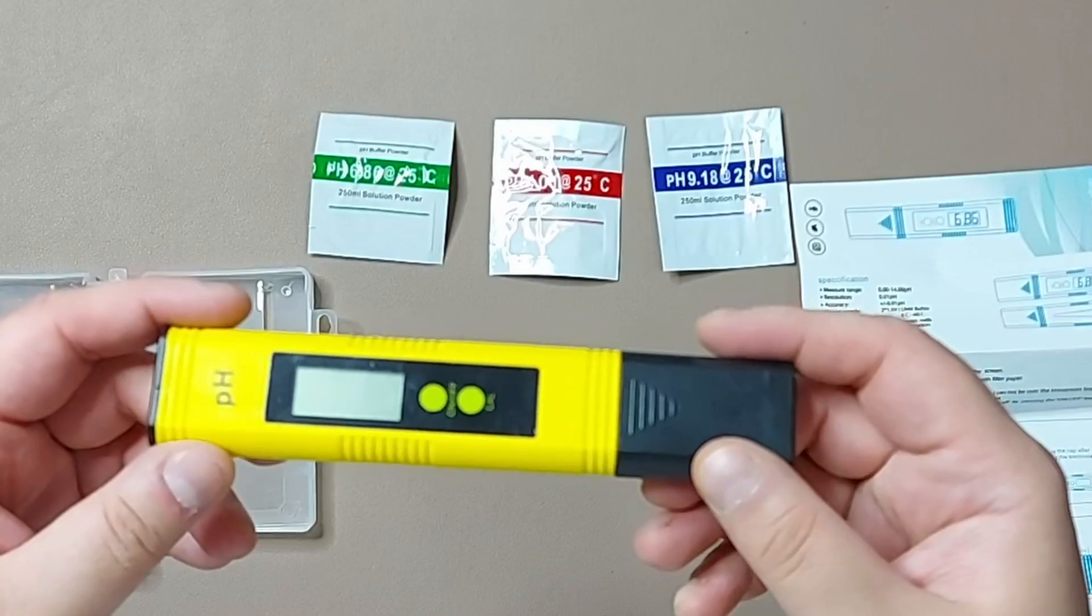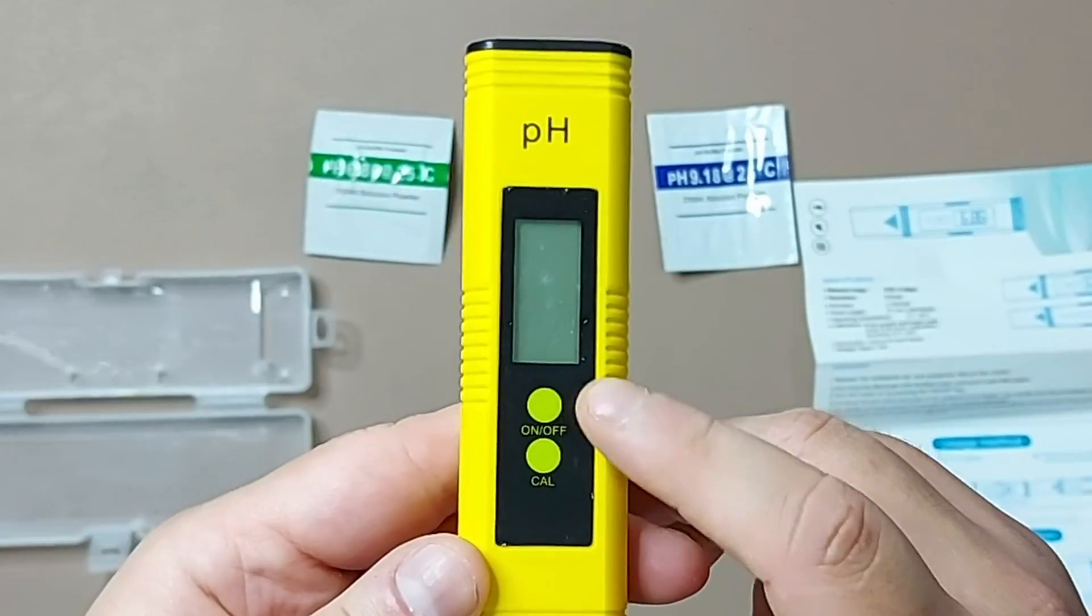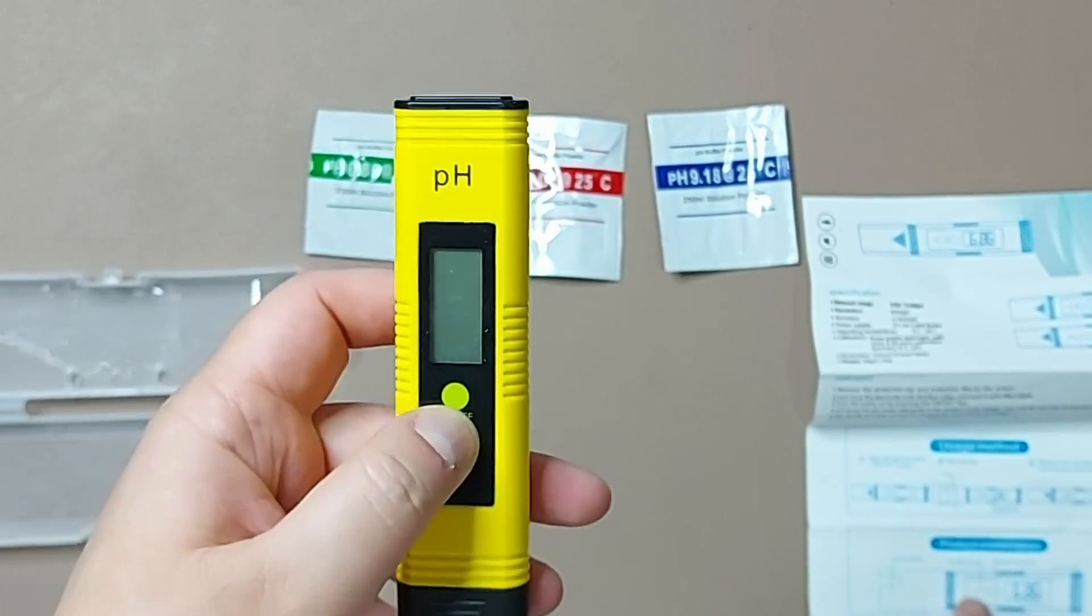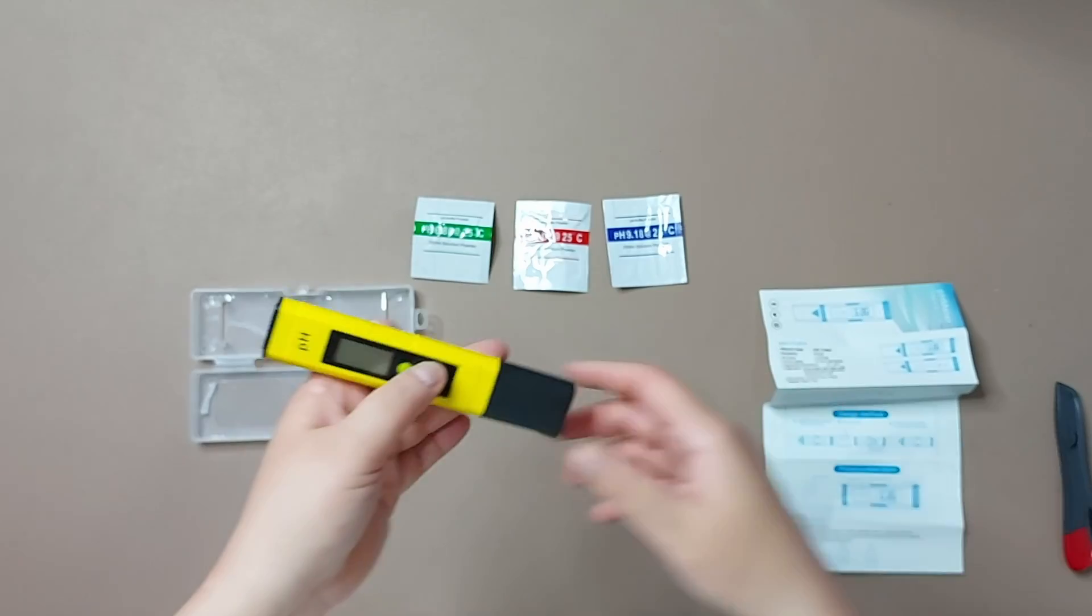This is the device. This is the on and off button, and as it says here, this is the calibration button. The electrode...